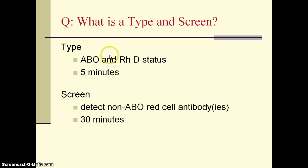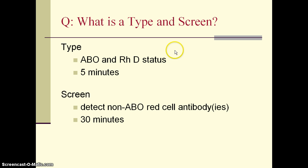Forward testing of the patient's red cells determines ABO and RHD antigen status, while the patient's plasma undergoes reverse testing to determine whether it has anti-A, anti-B, or both. Forward and reverse results should be concordant. For example, if you are blood group A on forward testing because your red cells have A antigen, your reverse testing on the plasma should show the presence of anti-B.